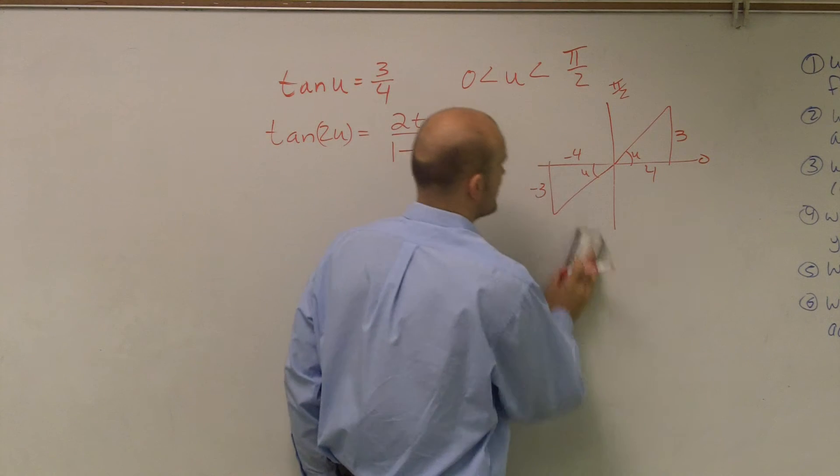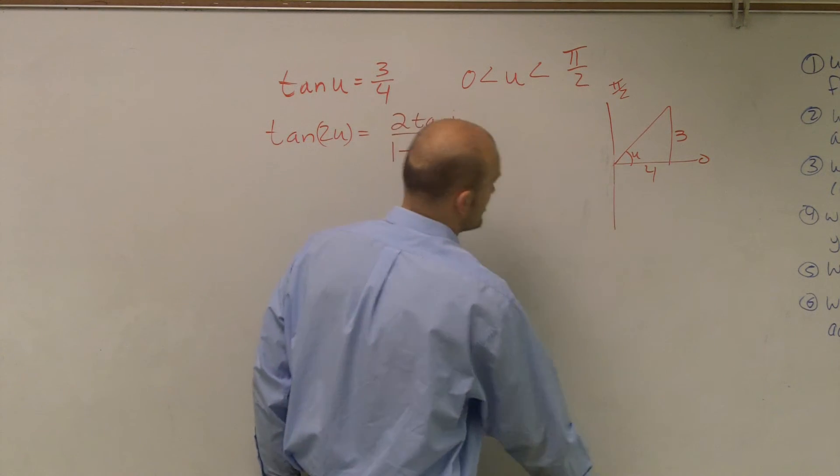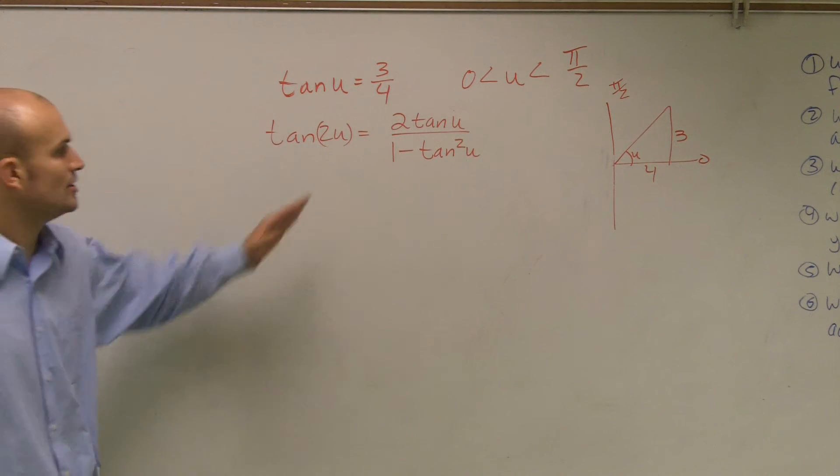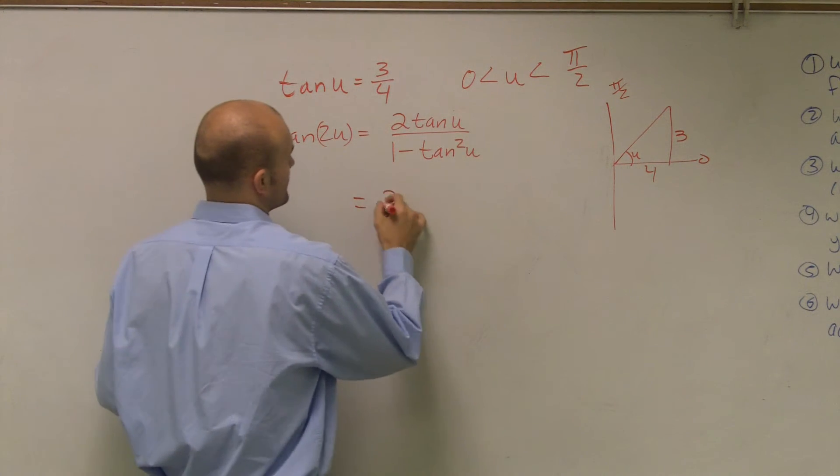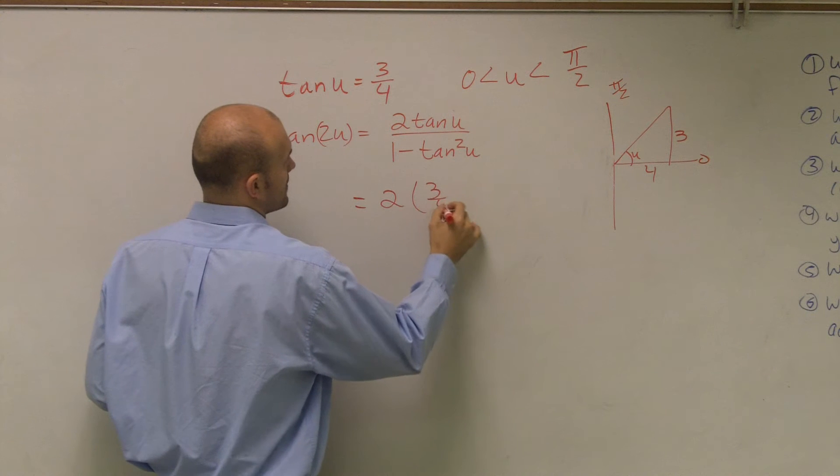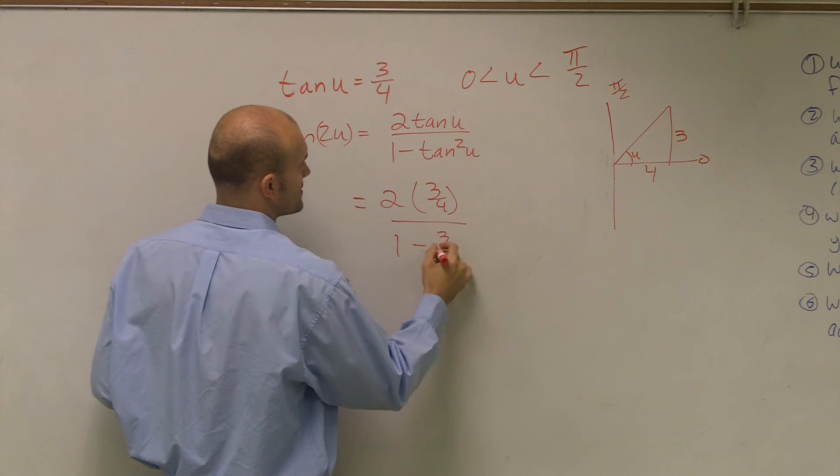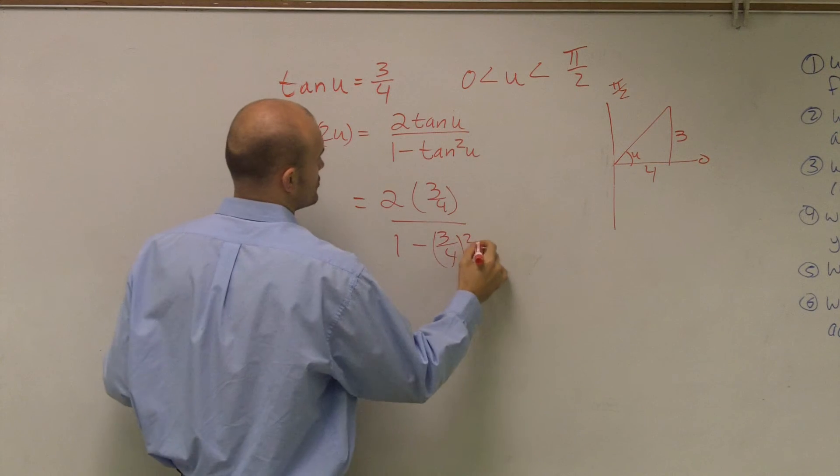So therefore, I'm just going to be dealing with the positive 3 fourths. So now what I can do is plug in that value. So what I have is 2 times 3 fourths all over 1 minus 3 fourths squared.